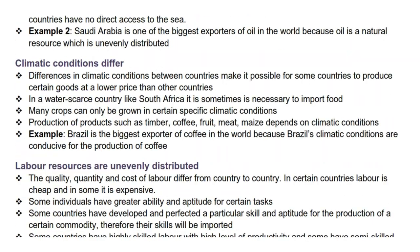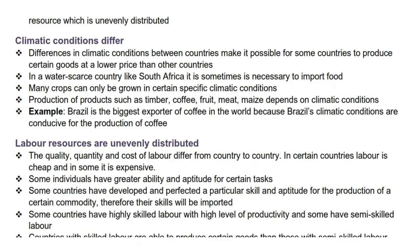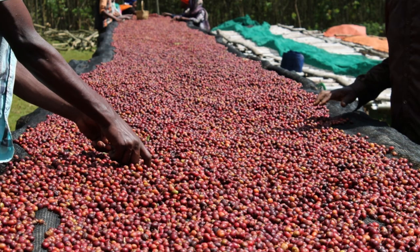The next supply reason is that climatic conditions differ. Differences in climatic conditions make it possible for some countries to produce certain goods at a lower price. In a water-scarce country like South Africa it is sometimes necessary to import food. Many crops can only be grown in specific climatic conditions — products such as timber, coffee, fruit, meat, and maize depend on climatic conditions. For example, Brazil is the biggest exporter of coffee because its climatic conditions are conducive for coffee production.